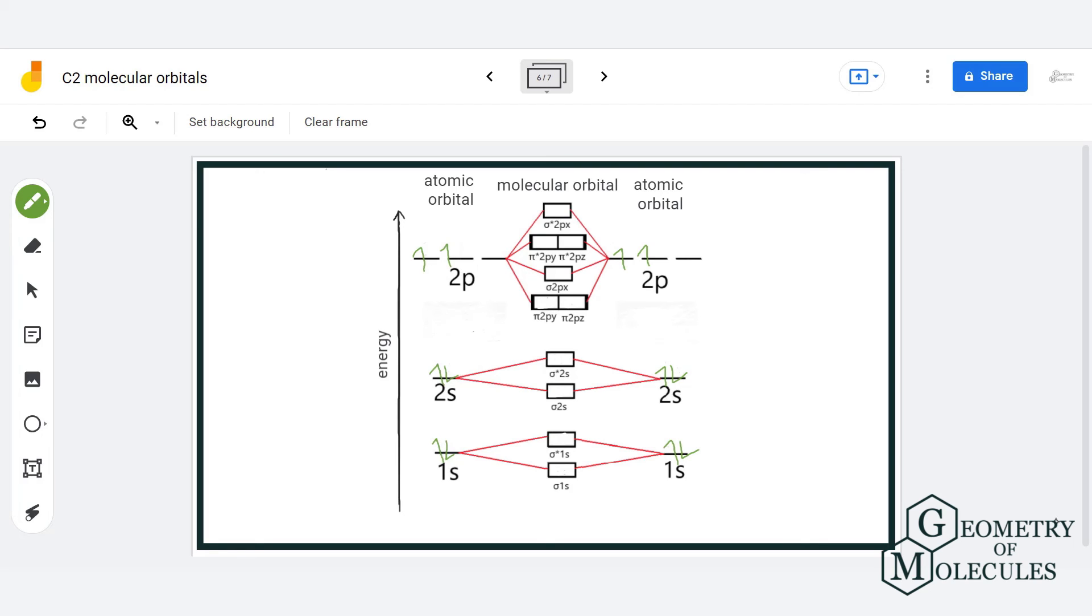This gives us total of 12 electrons that we will have to arrange in the molecular orbitals. Now according to Aufbau's principle, we will start arranging electrons based on the energy level of orbitals. So the first two electrons will go in sigma 1s with opposite spin as it has the least energy and next two will go in sigma 1s star. Then in sigma 2s and sigma 2s star.